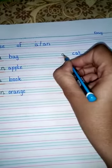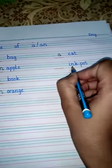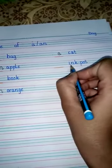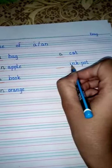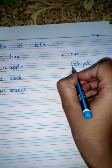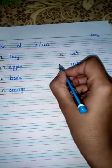Ink pot: see the first letter. First letter is I and I is our vowel, so we will write 'an'.